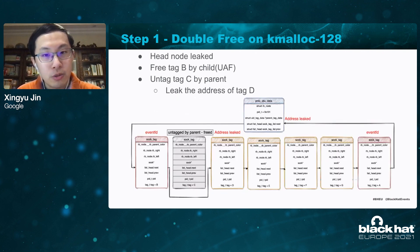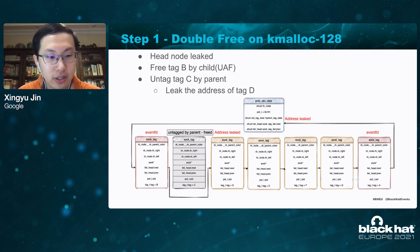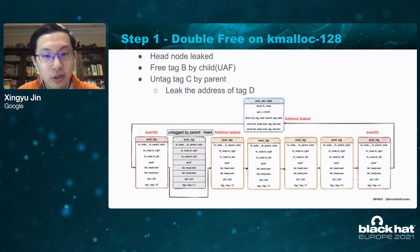In order to bypass all the security checks, here is the approach. First, untag the soc_tag structure from a child process to trigger the use-after-free. Then spray eventfd to occupy the soc_tag structure and untag soc_tag structure C, so the unlink primitive helps us leak the address of soc_tag C. Similarly, you may leak the list_head address. There are also soc_tag structures E, F, and G in the linked list, which we will discuss later.